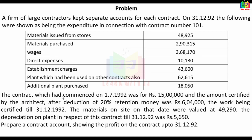The contract commenced on 1-7-1992 and was for Rs 15,00,000. The amount certified by the architect after deduction of 20% retention money was Rs 6,04,000, with work certified till 31-12-1992. Materials on site on that date were valued at Rs 49,290. Depreciation on plant in respect of this contract till 31-12-92 was Rs 5,650.